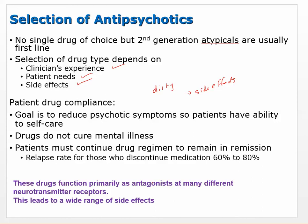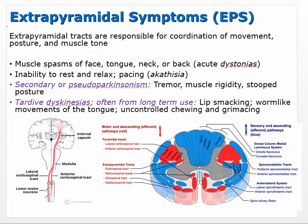These drugs function primarily as antagonists at dopamine and serotonin receptors, but also at other neurotransmitter receptors, which leads to a wide range of side effects. The extrapyramidal system is the basis for extrapyramidal symptoms. When your brain tells your body to move, those signals pass through the pyramidal tracts for directed, conscious movement.